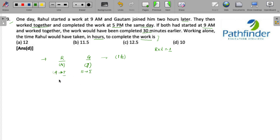So Rahul has worked for 8 hours and Gautam has worked for 6 hours. So 8 hours into Rahul's rate R plus 6 hours into Gautam's rate G. So 8 into R plus 6 into G must be equal to total work. This is your first equation.